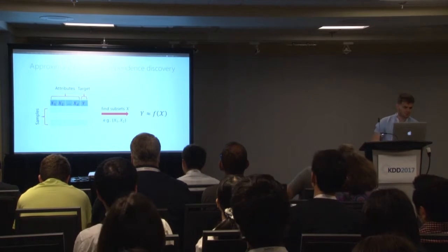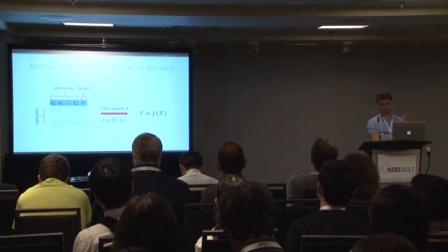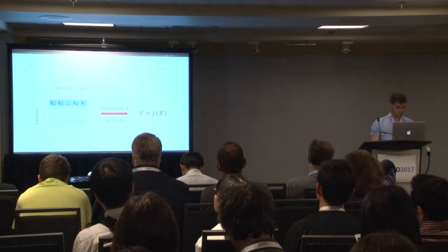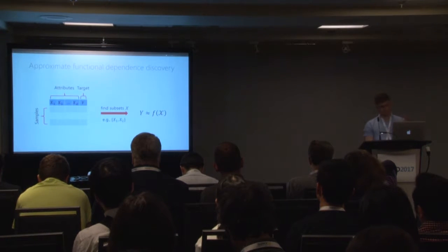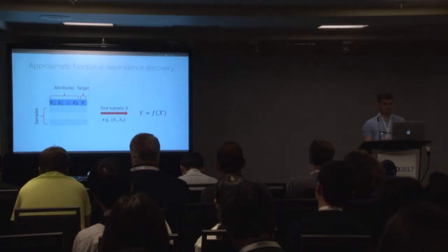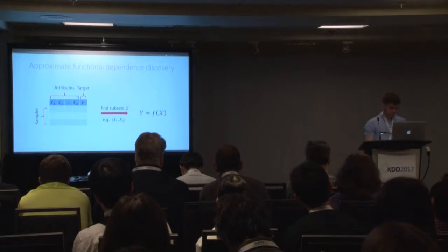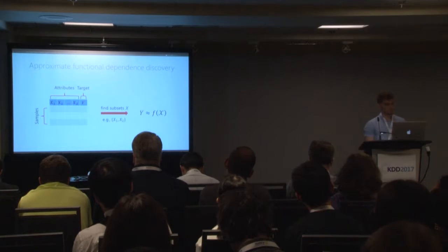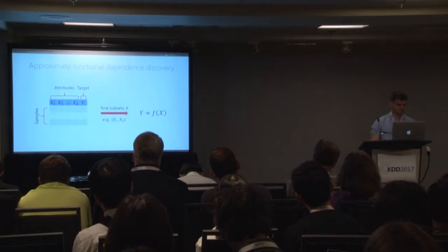The task is discovering approximate functional dependencies. Given samples from some underlying domain consisting of attributes and a target, the task is to find subsets — for example, X1 and X2 — such that Y becomes an approximate function of X. One thing to note is that we don't care for the particular form of the function. And while this is a general problem concerning both categorical and continuous variables, in this paper we only consider the categorical case.